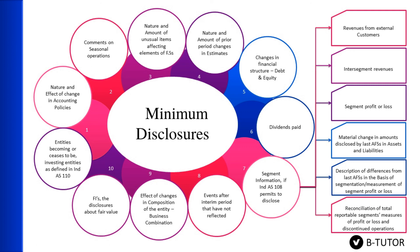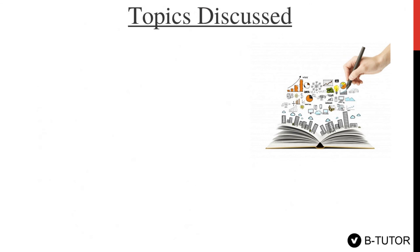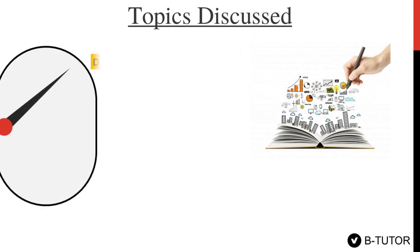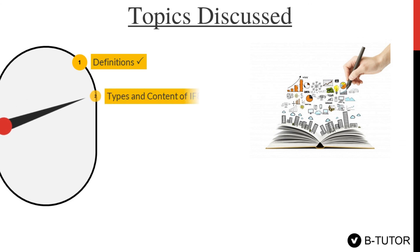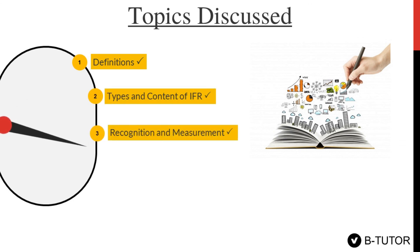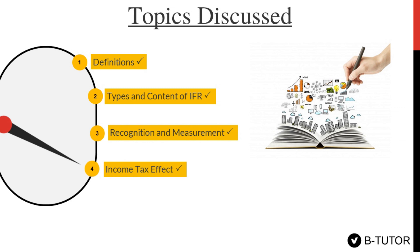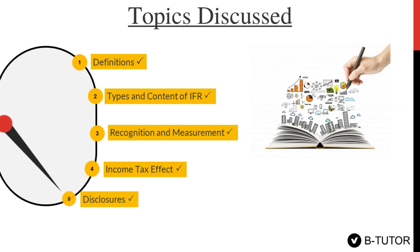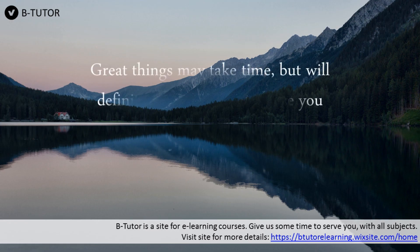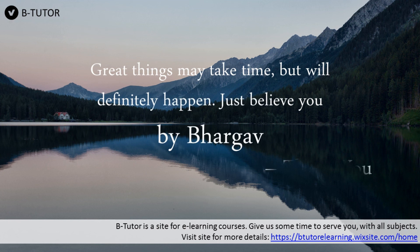Now let's recap what we have discussed so far. We covered definitions, types and minimum content, recognition and measurement of items, income tax effect, and finally disclosures. In case of any doubts, please comment below. Thank you so much, guys. Take care.